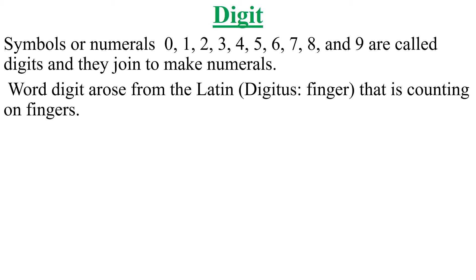Symbols or numerals 0, 1, 2, 3, 4, 5, 6, 7, 8, and 9 are called digits and they join to make numerals. So students, there are only 10 digits which I have written from 0 to 9.